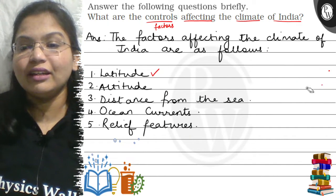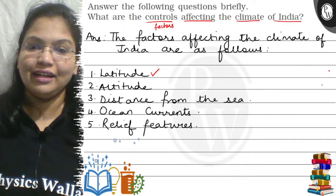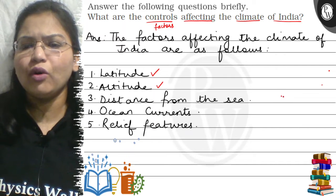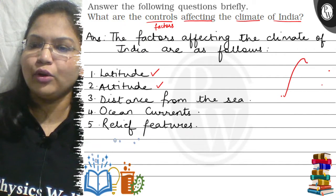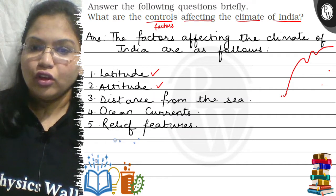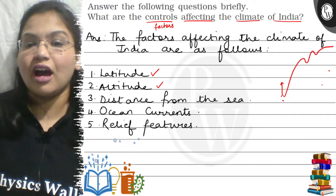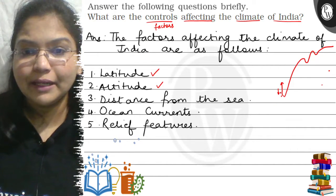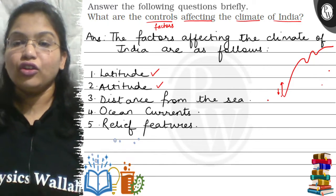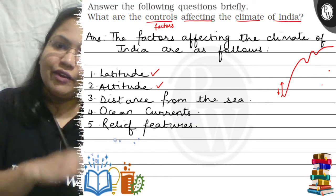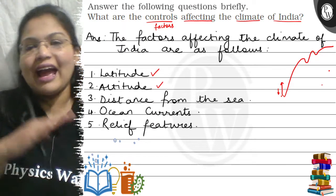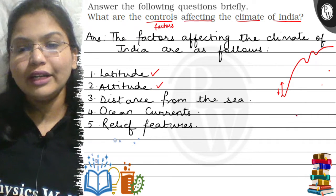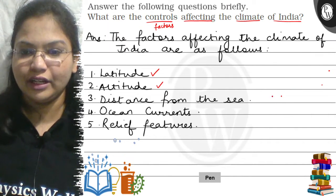The next point because of which we see change in climate in India is altitude. If I go from a lower area to a higher area — say a plateau, then hills, and then mountains — as I move upwards away from sea level, the temperature drops, and when the temperature drops the climate changes. So in the plains they have a different type of climate and in the hilly areas they have a different type of climate.